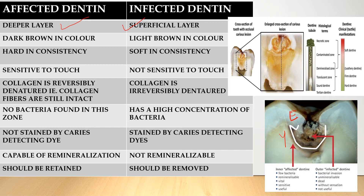The next difference is consistency. Affected dentine is hard in consistency, while infected dentine is soft in consistency. This is the most important point when removing caries. In pre-clinicals and clinicals, your staff will tell you to remove all the soft caries. So you remove the soft infected dentine and can leave the hard carious lesion, because that is your affected dentine. The deeper layer — affected dentine — is hard, and infected dentine is soft.